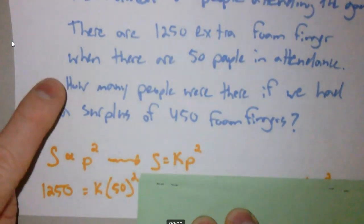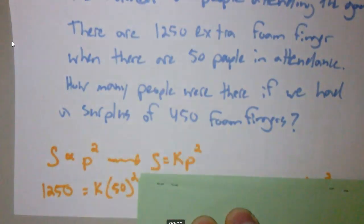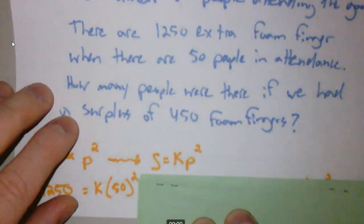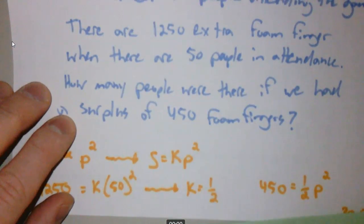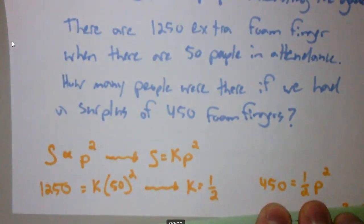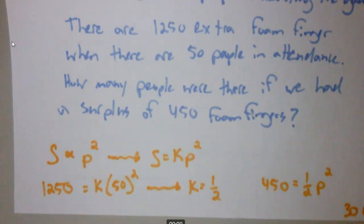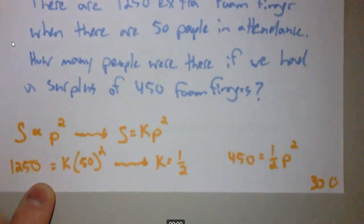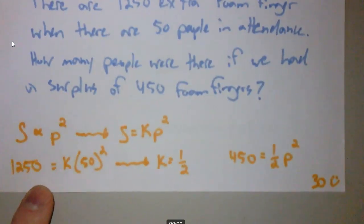Whatever I need to do. It says how many people were in attendance, figure out what p is, if the surplus was 450 foam fingers. So I put a 450 in there for k. Looks something like that. And then I'll solve. I'll multiply 2 to the other side, 900. Take a square root of both sides, plus or minus 30. But in the context of the problem, it does not make sense to have negative 30 people in attendance. So our answer is just 30. Not too bad. We did an easy run. We did a slightly more difficult one.